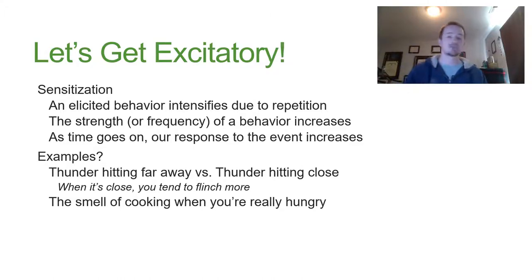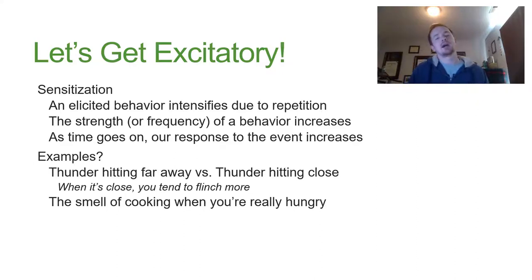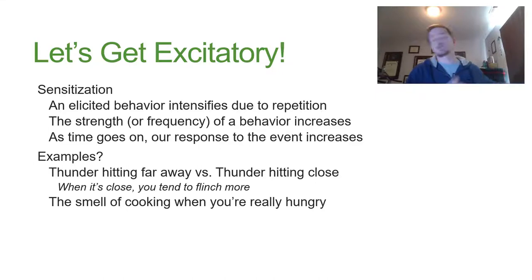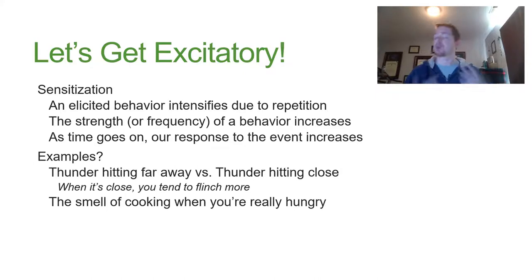For example, if thunder hits right now and it hits pretty close, it freaks me out and I get on edge. I'm very sensitive to what's going on — directly influenced by something that just happened. That memory of that really loud bang is going to influence my behavior for the next couple of minutes. Think back to implicit memory and priming.